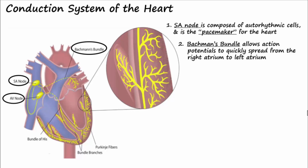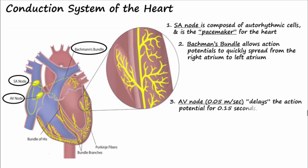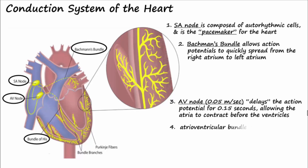The AV node then delays the action potential for approximately 0.15 seconds, allowing the atria to contract before the ventricles. This delay is due to the very slow speed of conduction in the AV node, which is approximately 0.05 meters per second. From the AV node, the action potential is conducted via the atrioventricular bundle or bundle of His into the interventricular septum.